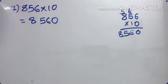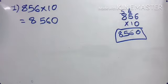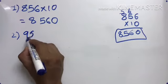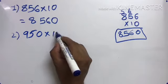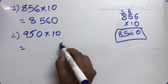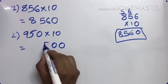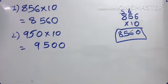Both methods give the same answer. Right. For 10, 100, 1000, I simply add zeros. One zero for 10, two zeros for 100.